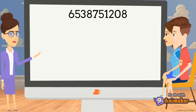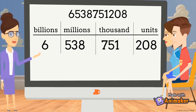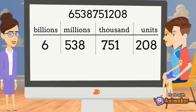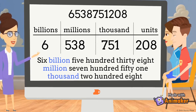Another number. First, we will separate it into periods. I will represent it in a table. There is another new period, which is billions. Let's read it: six billion, five hundred thirty-eight million, seven hundred fifty-one thousand, two hundred and eight.